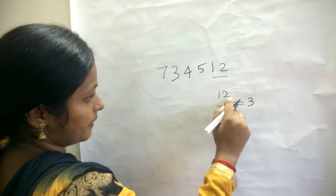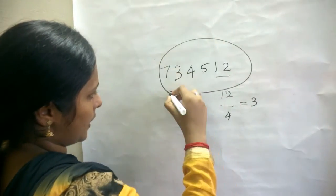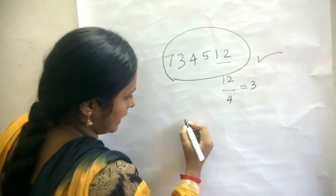Since this last 2 digits is divided by 4, this whole number is also divided by 4. So, consider another example,